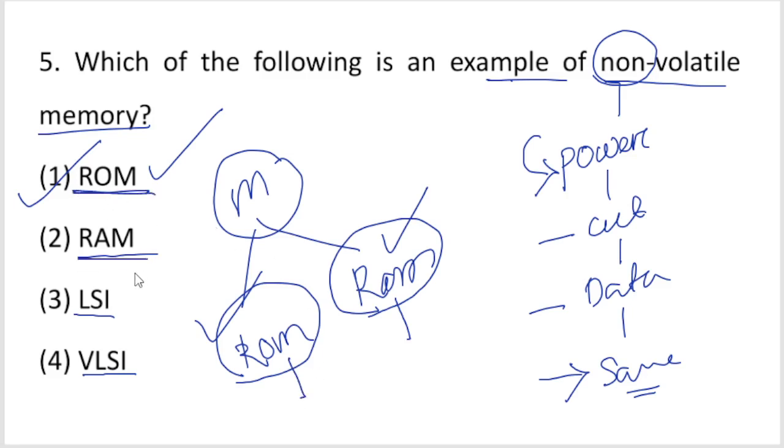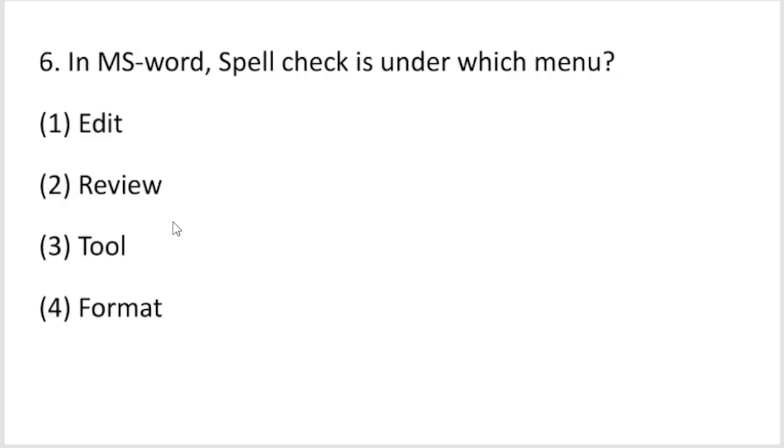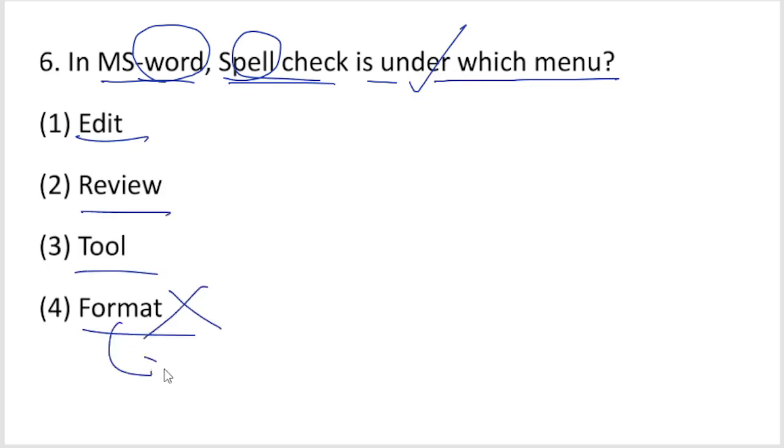In Microsoft Word, spell check is under which menu? Format is for text formatting like colors and decoration. Edit has cut, copy, paste. Review is the right answer - the spelling check is under the Review menu. The shortcut key is F7.